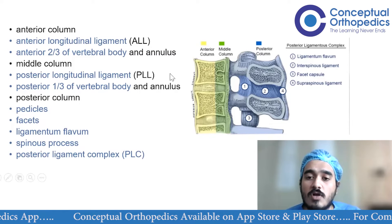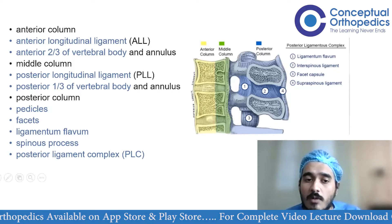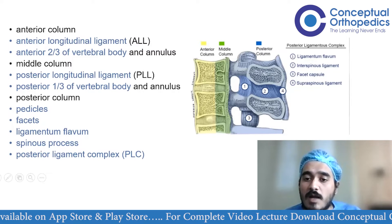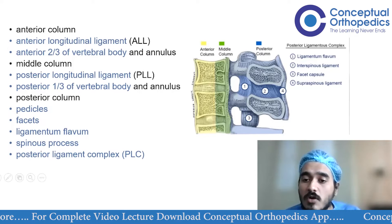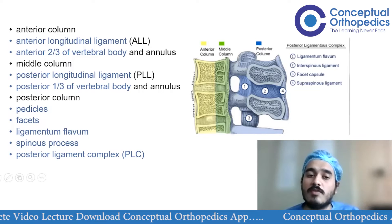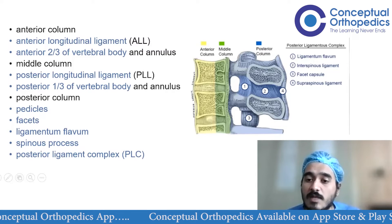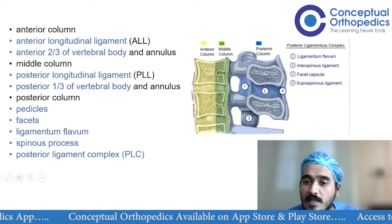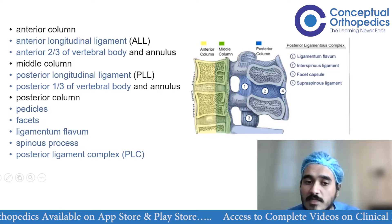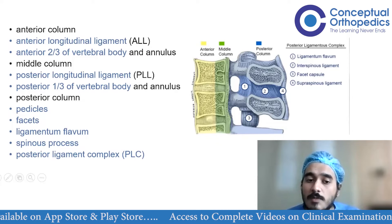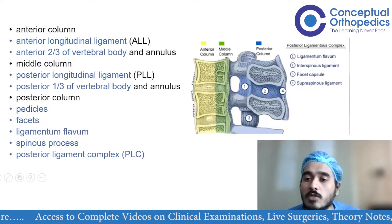The middle column comprises the posterior longitudinal ligament, the posterior one-third of the vertebral body, and the annulus. The posterior column includes the pedicles, facet joints, ligamentum flavum, articular processes, lamina, spinous process, and the posterior ligamentous complex (PLC).